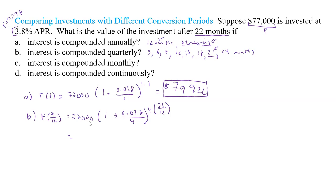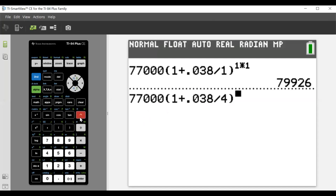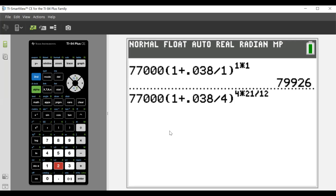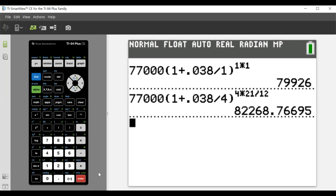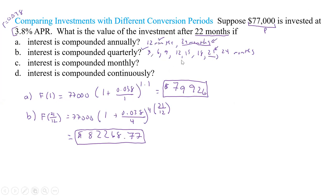Plugging that in: 77,000 × (1 + 0.038/4)^(4 × 21/12) gives us $82,268.77. That's significantly more than we got with annual compounding, because we captured three additional quarterly compounding periods that we missed by stopping at only 12 months in the annual case.